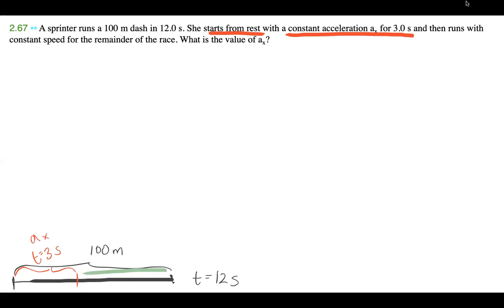Well, we know that total distance is equal to 100 meters. We know that it takes her 12 seconds altogether. We know that in this red portion, right here, she starts from vi equals 0 meters per second, she starts from rest as we said. And she accelerates with a constant acceleration of ax, which we don't know. And this happens for three seconds.